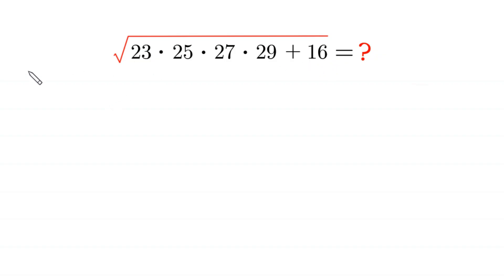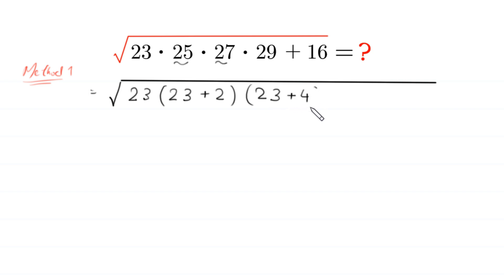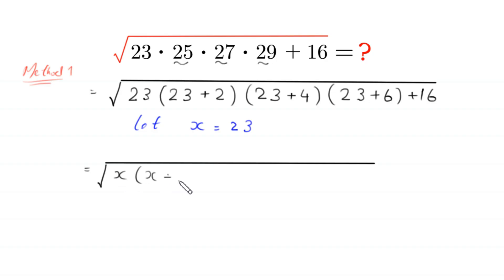We will solve it by two methods. Starting with Method 1, this expression can be written as: square root of 23 times (23+2) times (23+4) times (23+6) plus 16. We suppose that x is equal to 23, so the expression becomes square root of x times (x+2) times (x+4) times (x+6) plus 16.